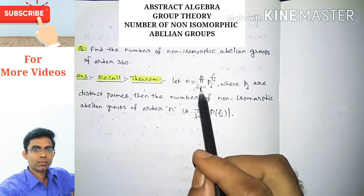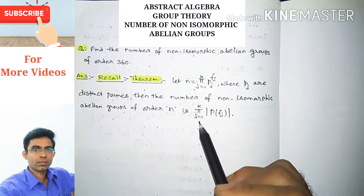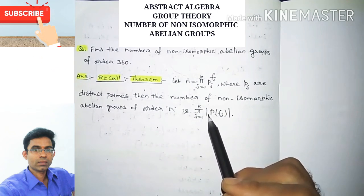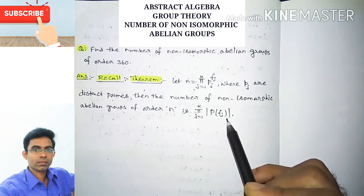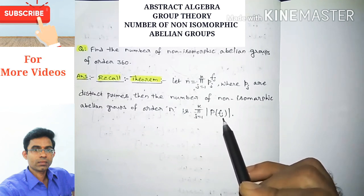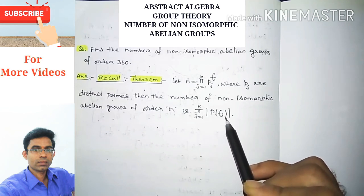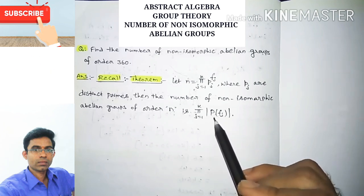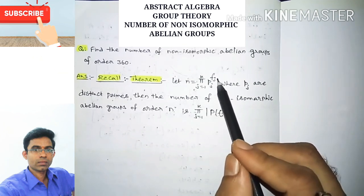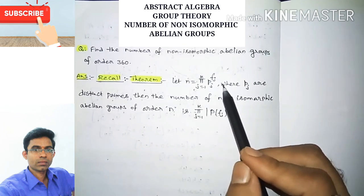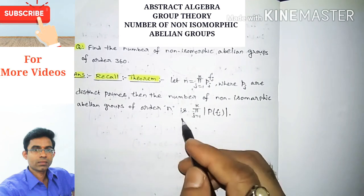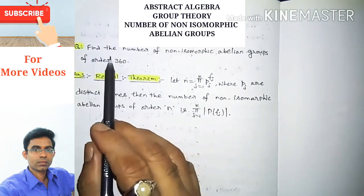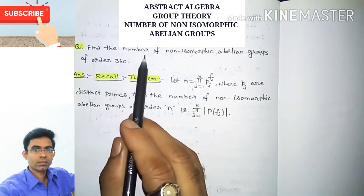Then the number of non-isomorphic abelian groups of order n is given by the product for j equals 1 to k of the cardinality of partitions of f_j. Here P(f_j) represents the number of partitions of that given power f_j.